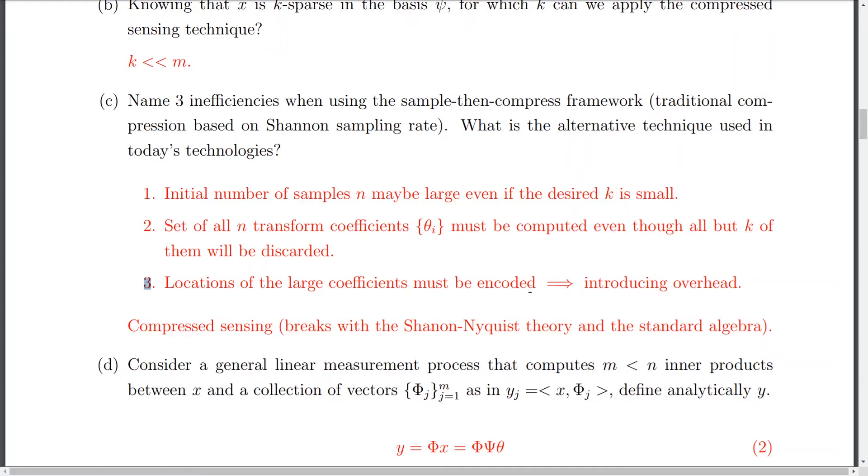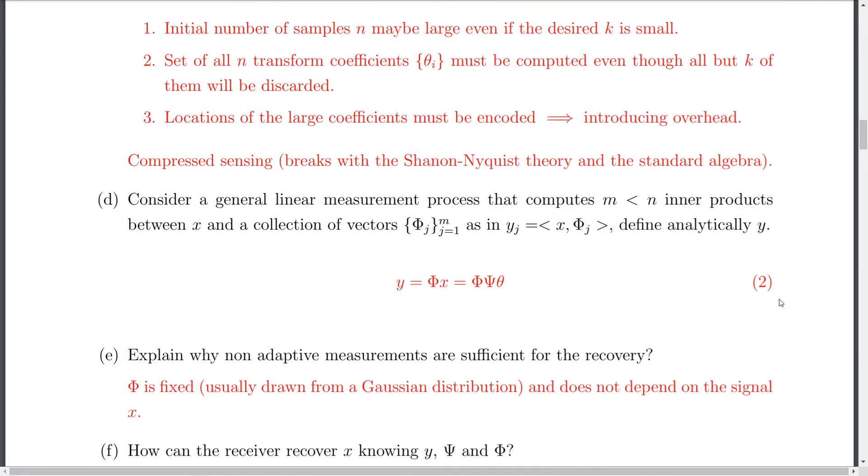Because remember, we have the problem of the L zero norm. We have a problem of where the non-zero coefficients are actually placed within a coefficient. And this will introduce a higher overhead, which we don't want to. Because the point was to compress, reduce the data size, not bring in something extra, like here a certain overhead. So, of course, the alternative was some technique like compressed sensing, which breaks with the traditional algebra and the Shannon Naquist theory. And you can read more about it in the lectures, of course.